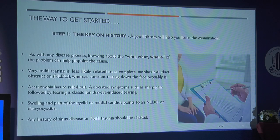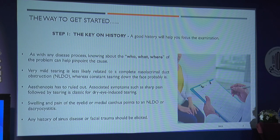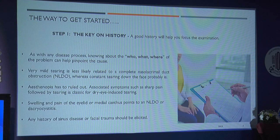How do we deal with these patients? The first and most important thing is history taking. We have to know who, what, and where is responsible for the problem. Very mild tearing is likely a complete NLDO, whereas constant tearing down the face is different. Asthenopia has to be ruled out. Swelling or pain in the eyelid or medial canthus points to NLDO or dacryocystitis. You also have to ask about history of sinus diseases or any injury.